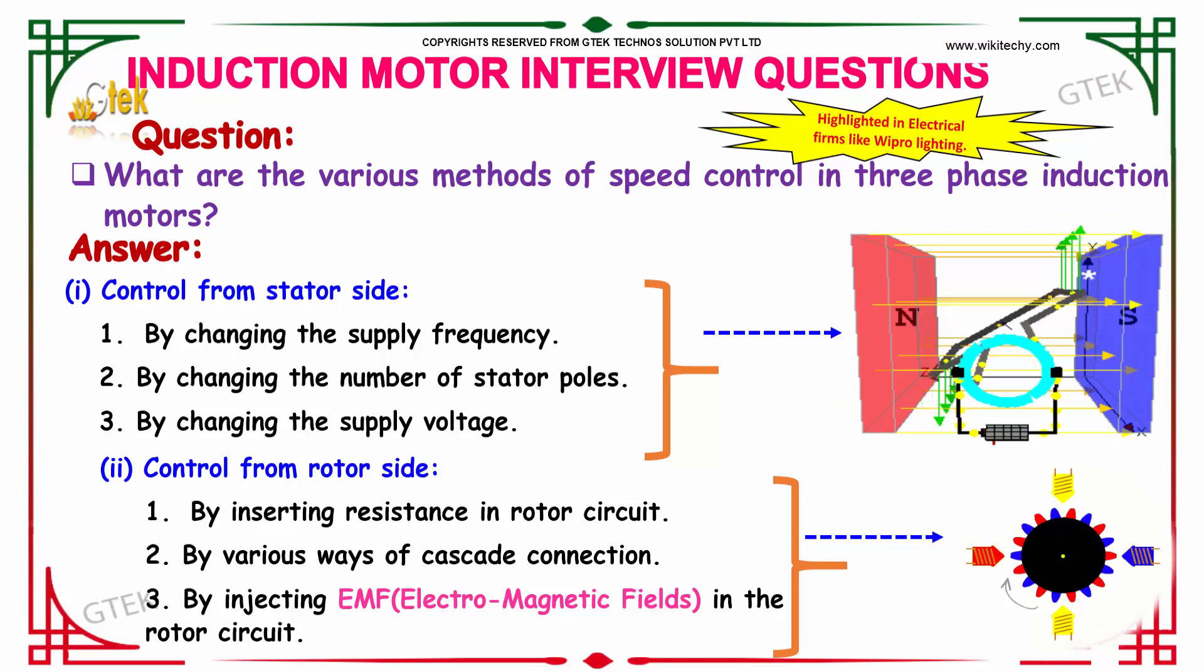If we consider control from rotor side, it's classified into three. That is based on by inserting the resistance in rotor circuit, the second one is by various ways of cascade connection, and the third one is by injecting the EMF in the rotor circuit. As we know, EMF is nothing but electromagnetic fields.